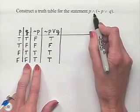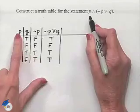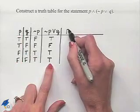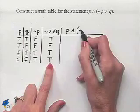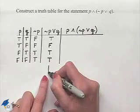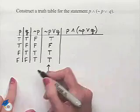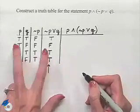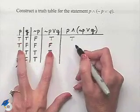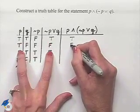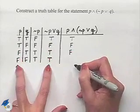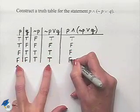Finally, we put this together with the column for P using the conjunction 'and', giving us P and (not P or Q). We look at the last column we filled in and the first column: true and true is true, true and false is false, false and true is false, false and true is false.